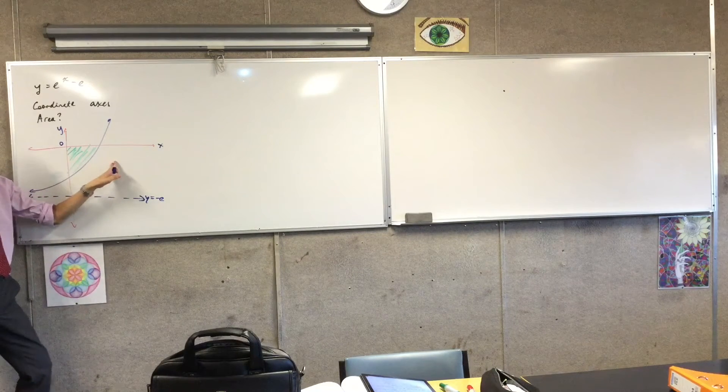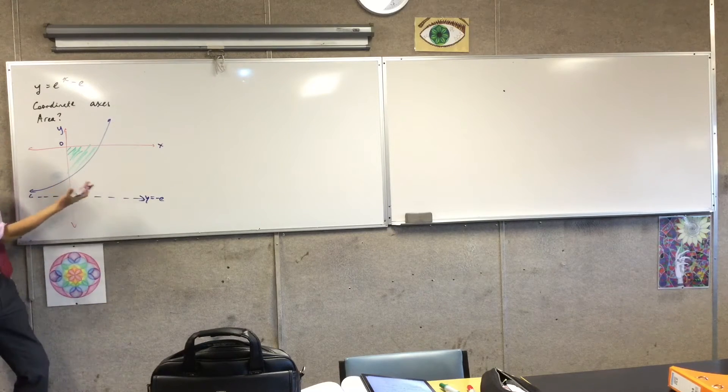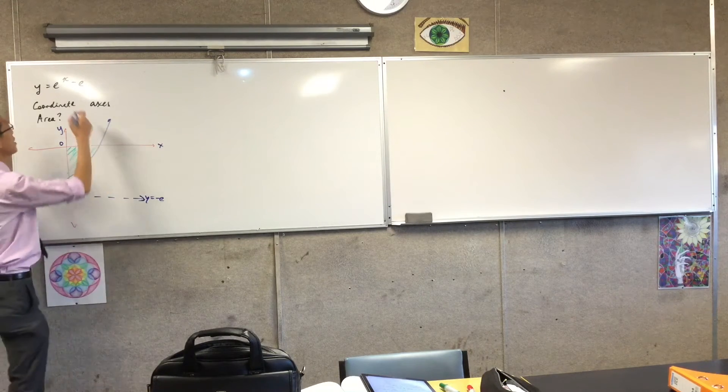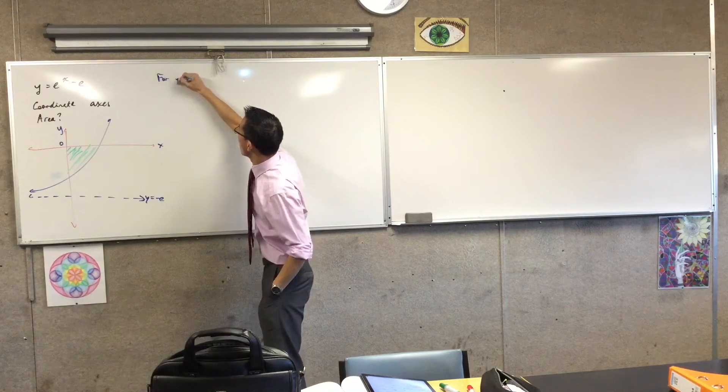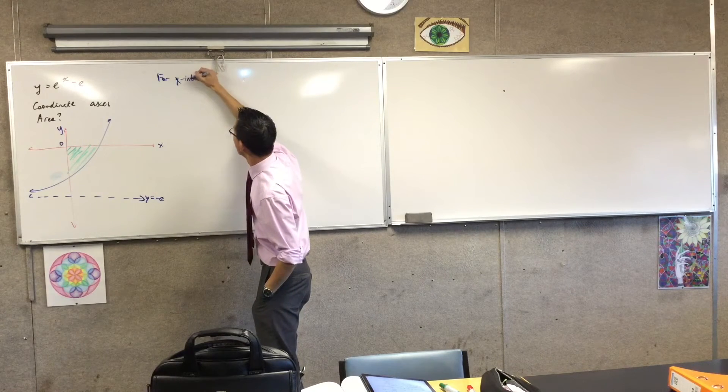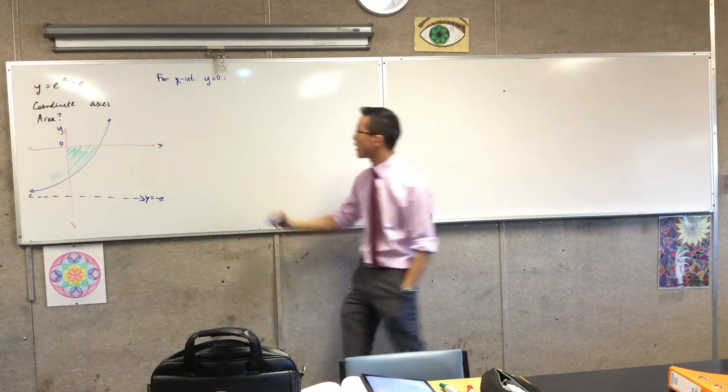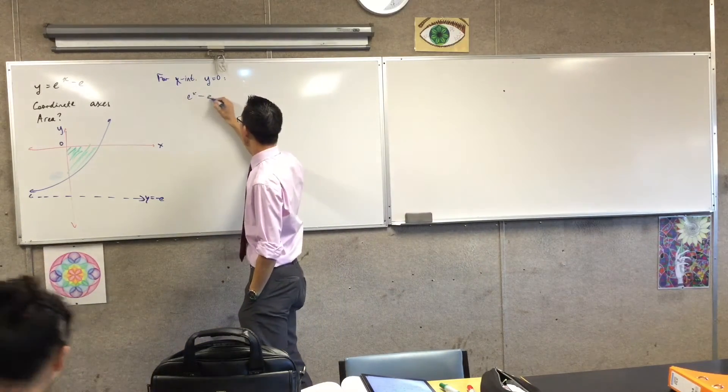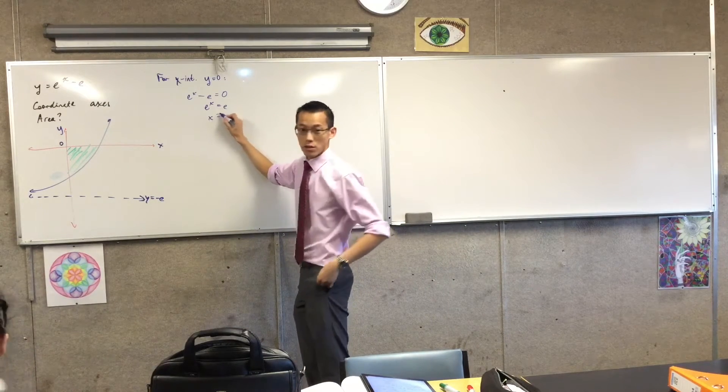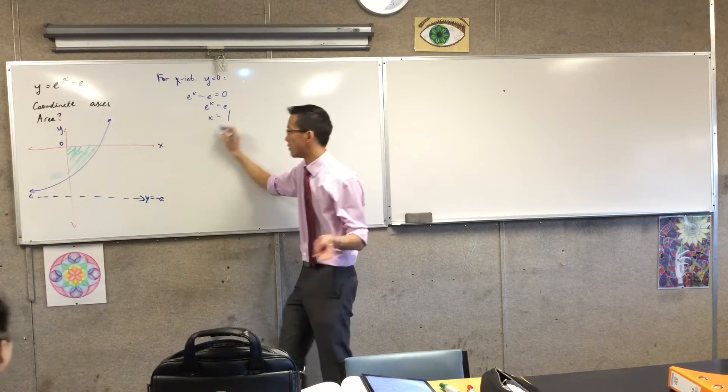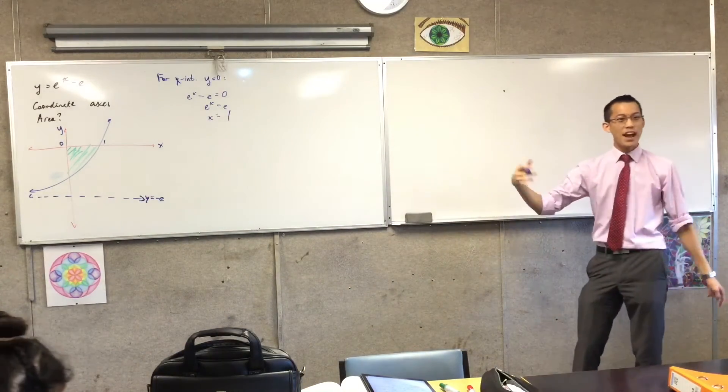The second x boundary, not as obvious. How do I find it? Y is 0. Yeah, I'm going to let y equal zero. That will give you the x-intercepts. So if y equals zero, I'm going to write it over here for x-intercepts. Y equals zero. I'm just going to solve that. So e to the x take away e equals zero. E to the x equals e, so x of course is equal to one. Fantastic. Could you ask for any simpler boundaries? So now that I have that, I can form an integral, but be careful.